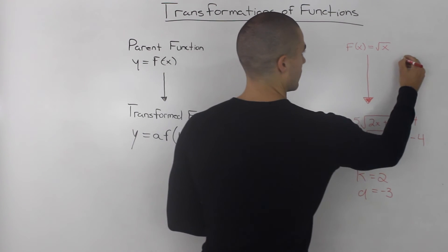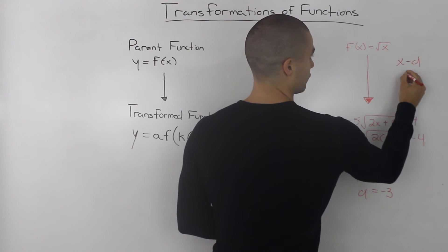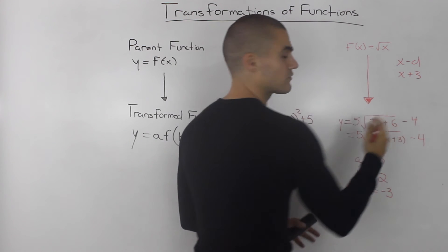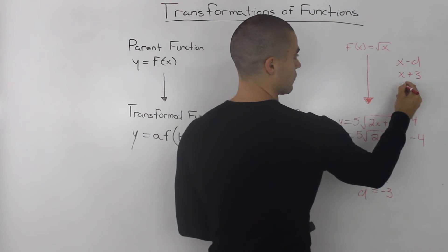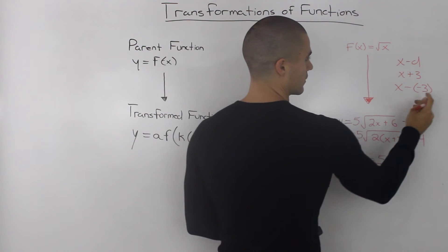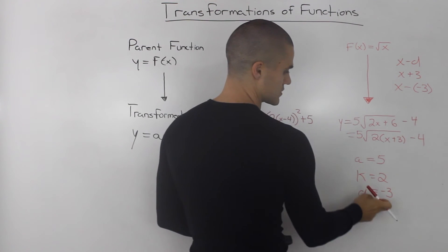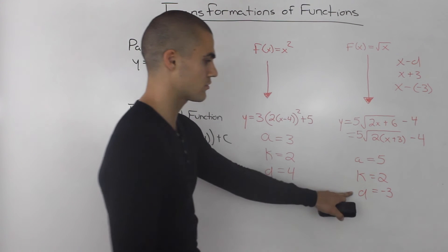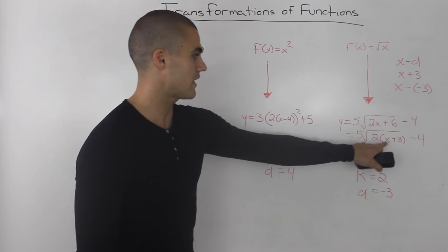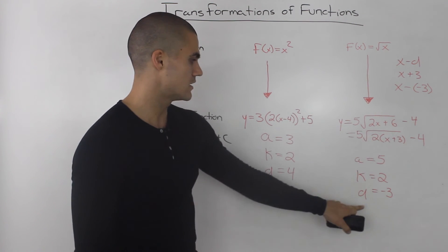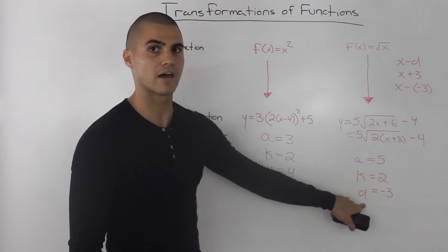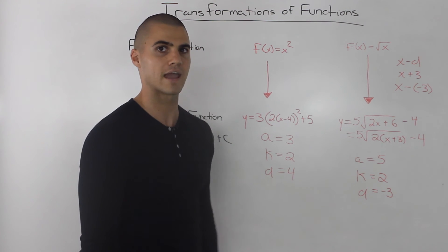So x-d and if we have x+3, we have to put it in the form x-d so it would be x-(-3), right? The two negatives are the same as a positive. So the d value is negative 3. So be careful with any positives. You always got to make sure that the d value is a corresponding negative.